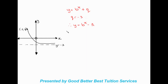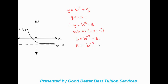We substitute in the point x equals minus 3 and y equals 5. So 5 equals b to the power of minus 3, minus 3. Taking the minus 3 over gives us 8 equals b to the power of minus 3. Because we can't have anything to the power of a negative, we rewrite this as a fraction: 8 equals 1 over b to the power of positive 3.